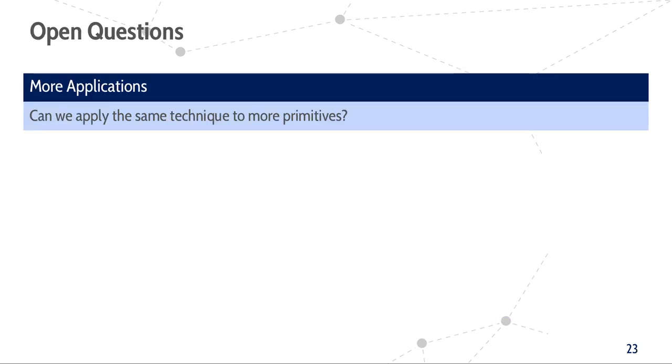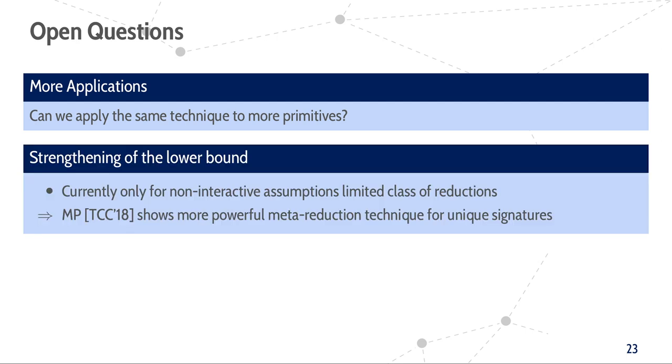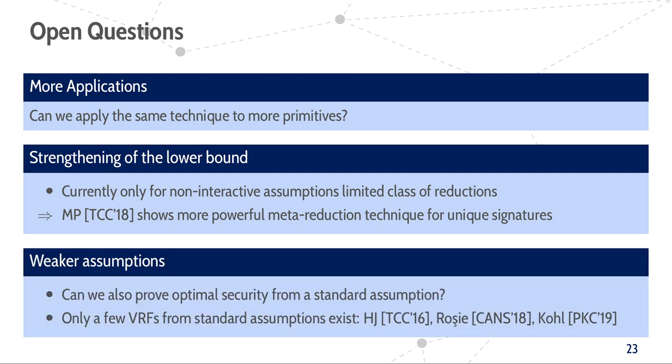However, there are still some interesting research questions remaining. First of all, it would be interesting to apply these techniques to prove more constructions optimally tightly secure, but also whether we can strengthen the lower bound to also apply to interactive assumptions and larger classes of reductions. A good starting point for this would be the meta-reduction technique by Morgan and Pass for unique signatures from TCC 2018. Finally, achieving optimally tight reductions from weaker or maybe even standard assumptions would also be nice, since our current construction only works from the Q-dBDHI assumption, but there exist VRF constructions from standard assumptions, like the one from Hofheinz and Jager from TCC 2016, or the ones by Fuchsbauer or Kohl from 2018 and 2019.